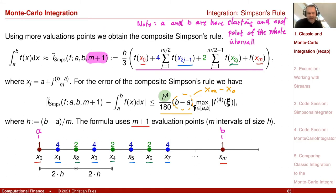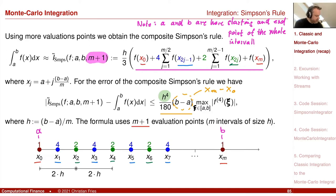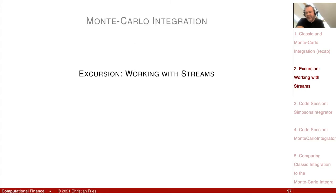For the Simpson's rule, we have this integration rule with M function evaluations — M plus one evaluation points — with an equidistant discretization and a special choice of coefficients. Let's implement this using the Java Streams API, which is a nice excursion we can do.